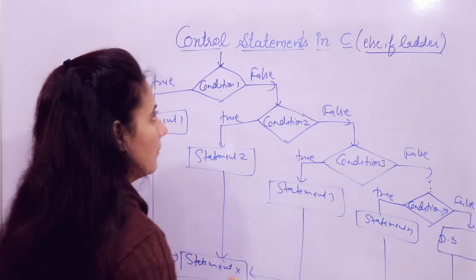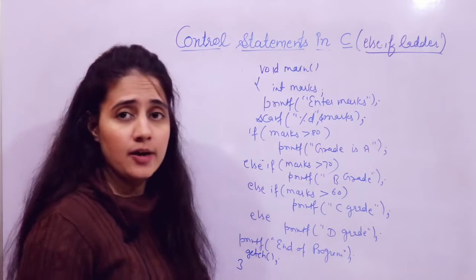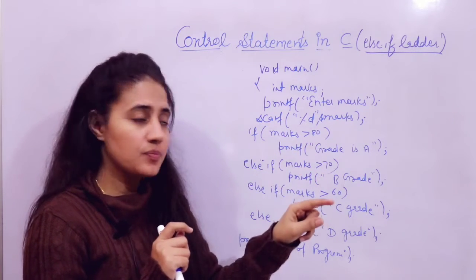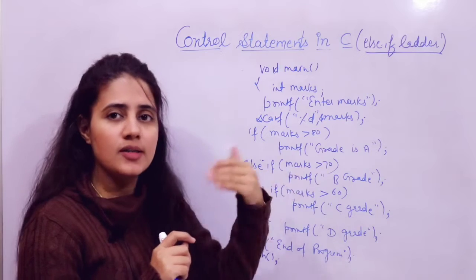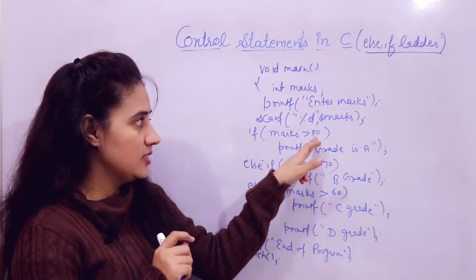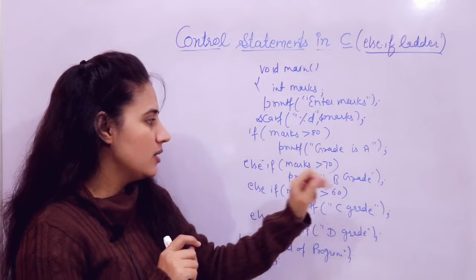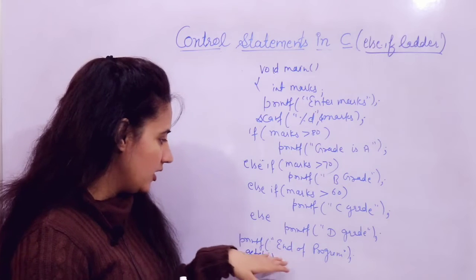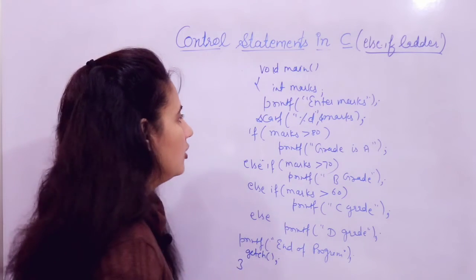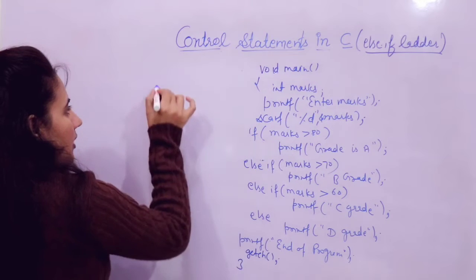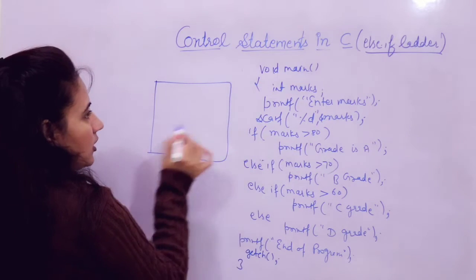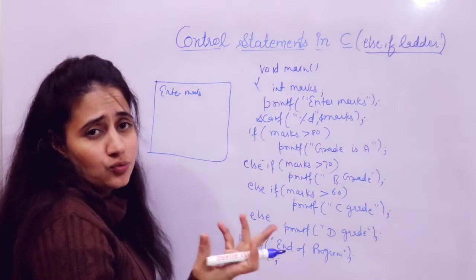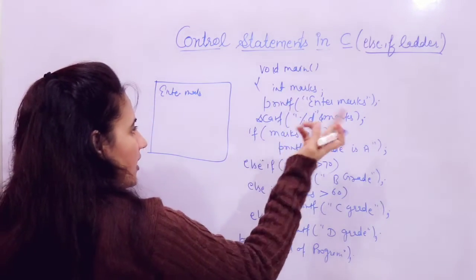Now let's discuss this with a program. If your marks are greater than 80, grade is A. Marks greater than 70 — grade is B. Marks greater than 60 — grade is C. Otherwise grade is D. And finally it will print 'end of program'. I'm taking integer here, but marks could be float — you can use float with percentage f. When you run the program, it will ask 'enter marks' on the output screen.